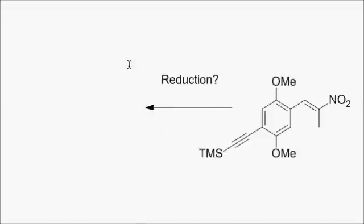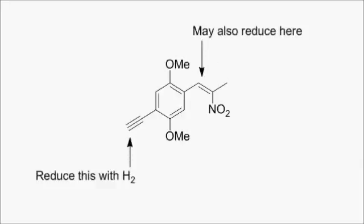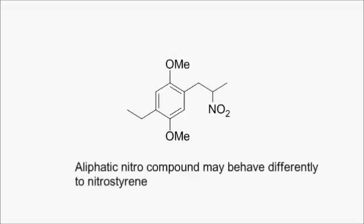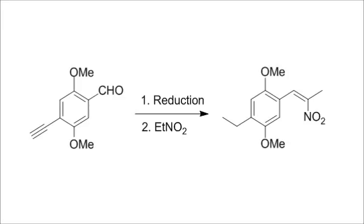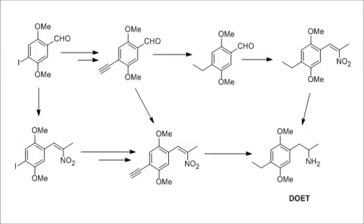Of course, then you have to worry about whether the reduction of the alkyne could also reduce the nitrostyrene. If it reduced the double bond, you're left with an aliphatic nitro group, which might behave differently to the usual alpha-beta unsaturated nitrostyrenes in the final reduction step. If you wanted to reduce the alkyne before the Henry condensation, then the aldehyde would certainly need to be protected from reduction to an alcohol. As for how to choose the best strategy, the only way is to actually do the experiments.